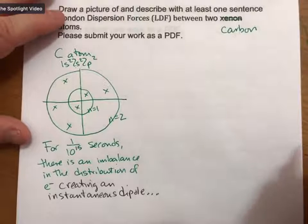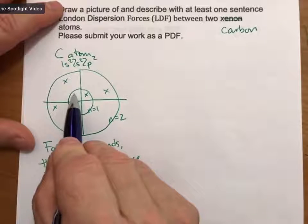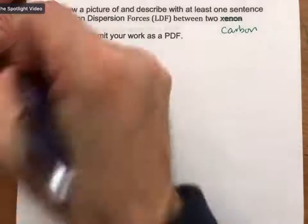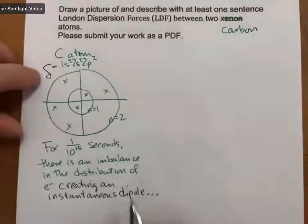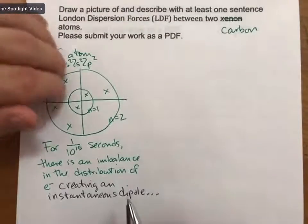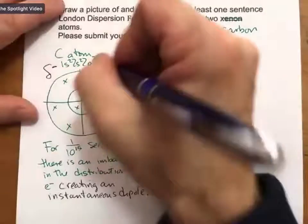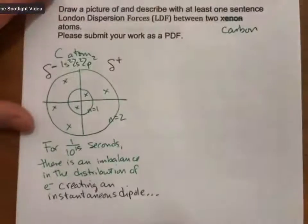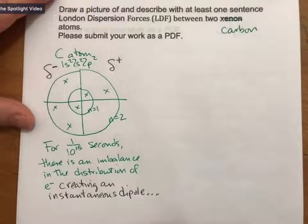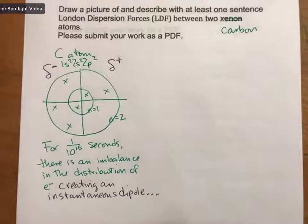And my instantaneous dipole is going to, because there are more electrons on the left, is going to have a partial negative charge on the left and a partial positive charge on the right. And you could also draw with a plus arrow if you wanted to.